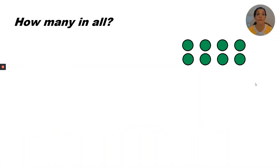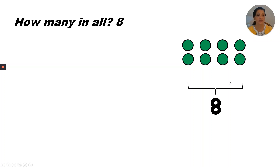How many are there in all? Eight, because four plus four is eight. Notice I've labeled how many in all underneath the array using a bracket pointing to the number eight.